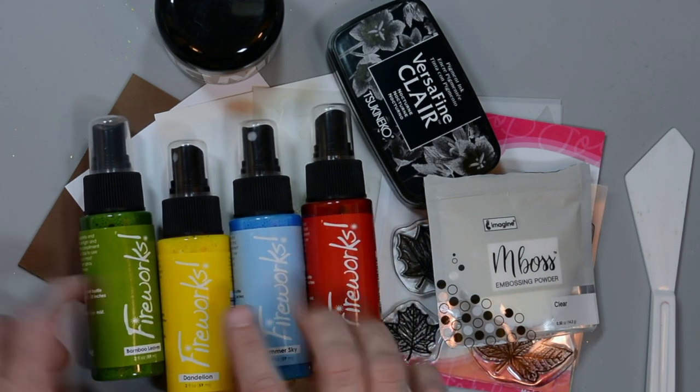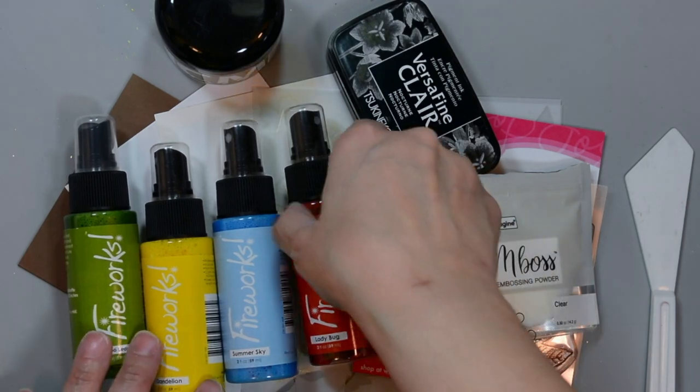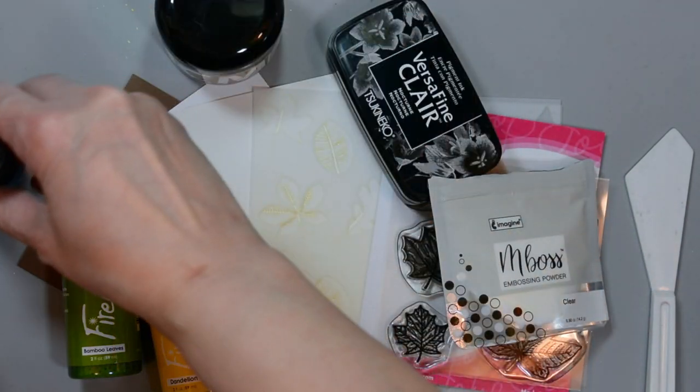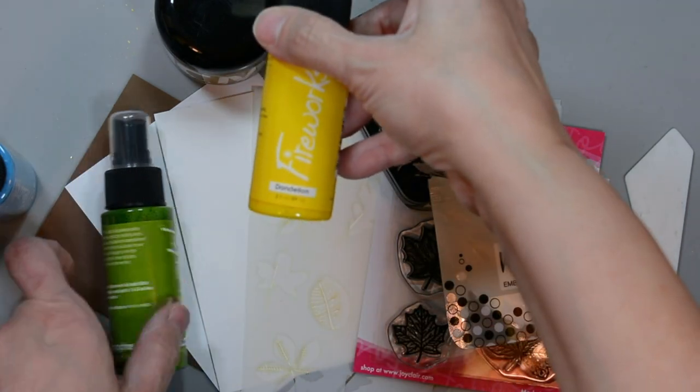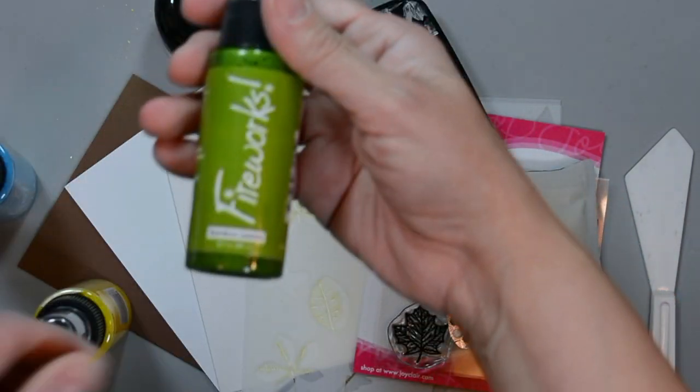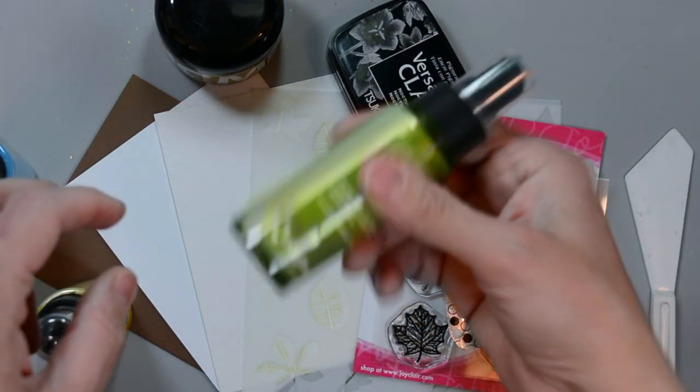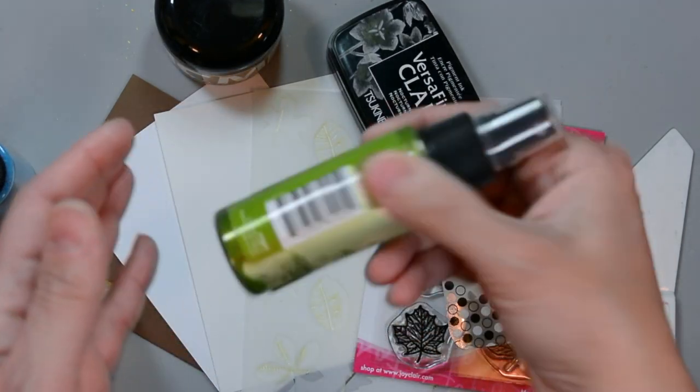We'll start with Imagine Crafts. I used a Fireworks spray in Ladybug, Summer Sky, Dandelion, and Bamboo Leaves. These are beautiful colorful ink sprays with some shimmer to them. All you do is shake them to incorporate the shimmer.